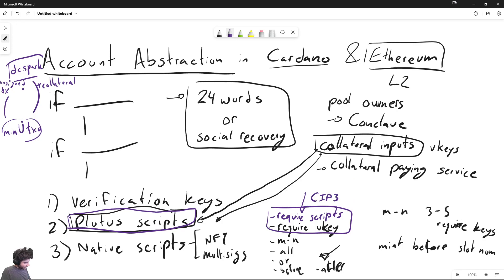There is a SIP for this called SIP 38 and it's proposed by DC spark that basically adds this require scripts call and facilitates account abstraction based off native scripts. Because then you can have your wallet be a native script and these native script wallets can then require more complex Plutus scripts for the behavior. So for example, your native script would have a require keys. So your 24 words will be a require keys call and notice that native scripts support an OR. So you have your OR here from your native script and the social recovery, this would be a require scripts.